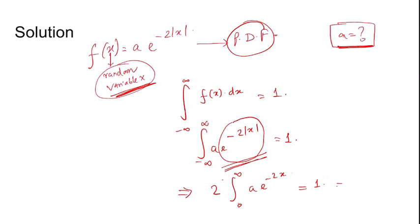Integration over e^(-2x) is becoming 2a e^(-2x) by minus 2 over 0 to infinity equals 1. So this is canceling out, so we are getting minus a times e^(-2∞) minus e^(0) equal to 1.